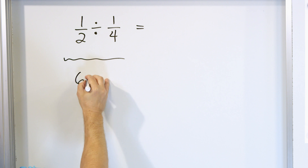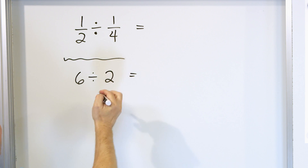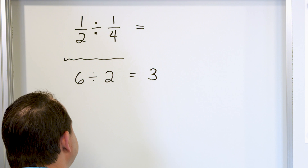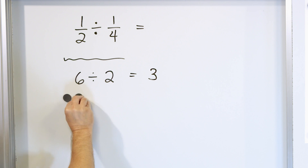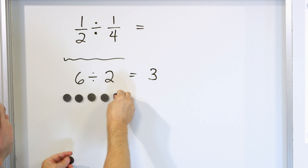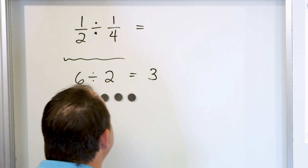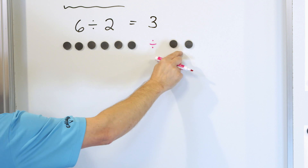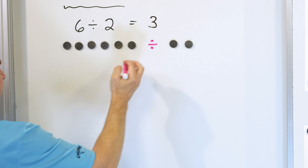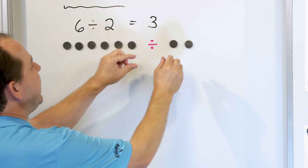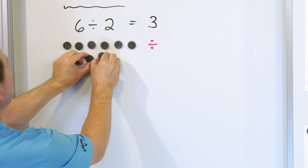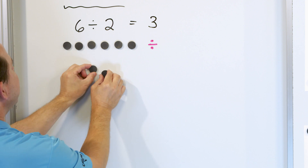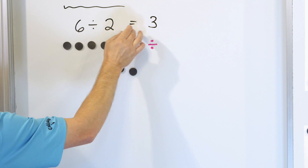Let's take the simpler problem: 6 divided by 2. You all know 6 divided by 2 is 3, because 3 times 2 is 6. But let's remember what it actually means to divide these numbers. We represent 6 with six little circles — 1, 2, 3, 4, 5, 6. We're dividing by 2, so how many times can 2 fit inside of the 6? It can fit one time, another time, and a third time. So 6 divided by 2 is 3.